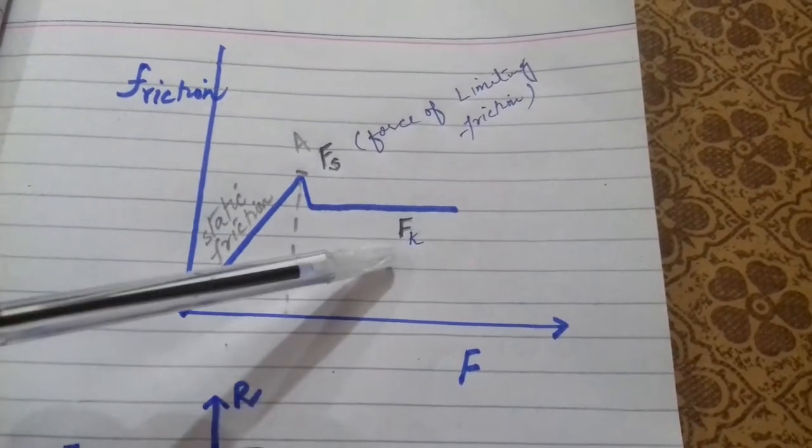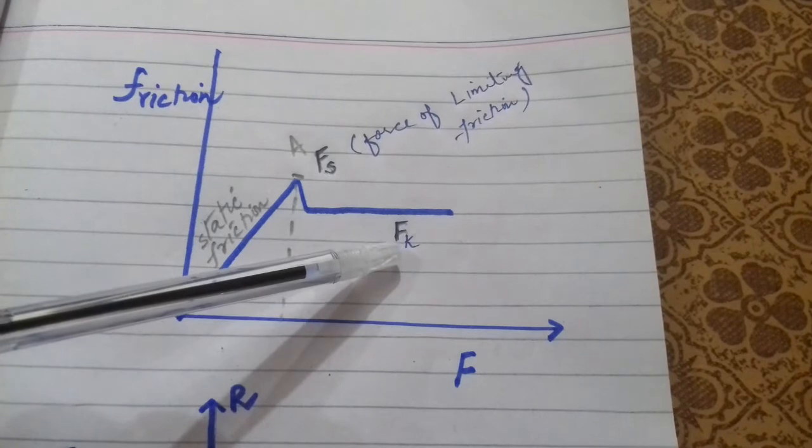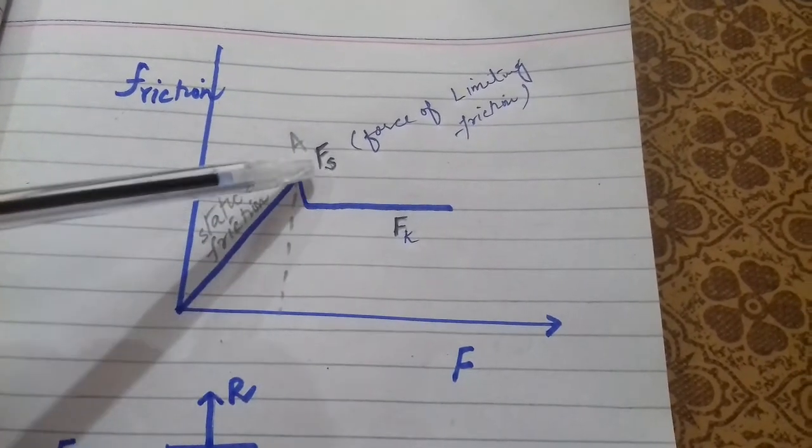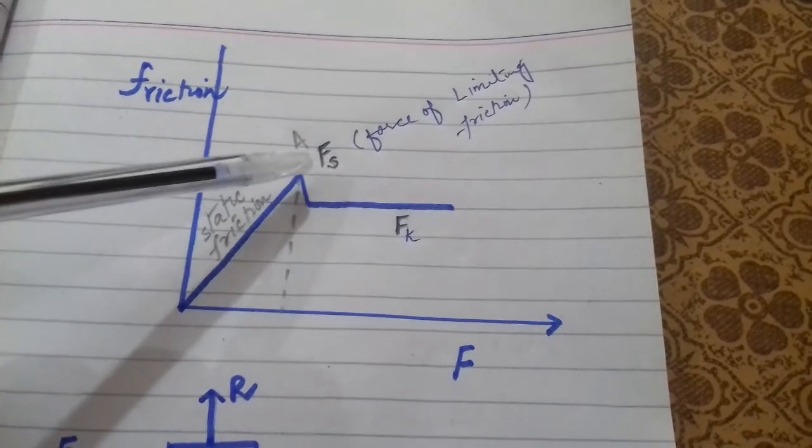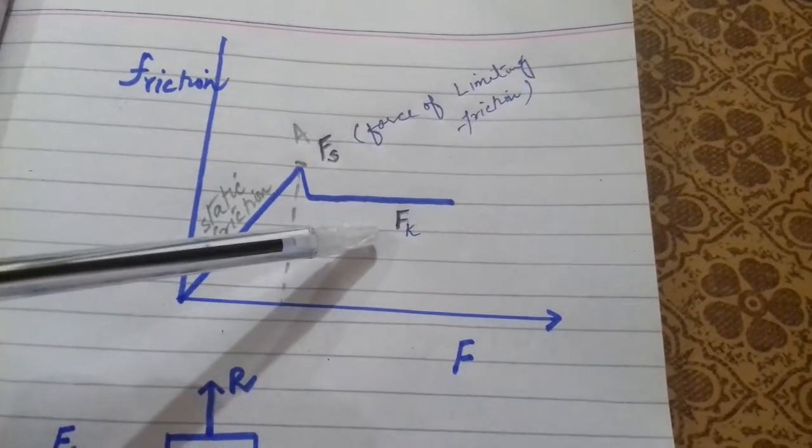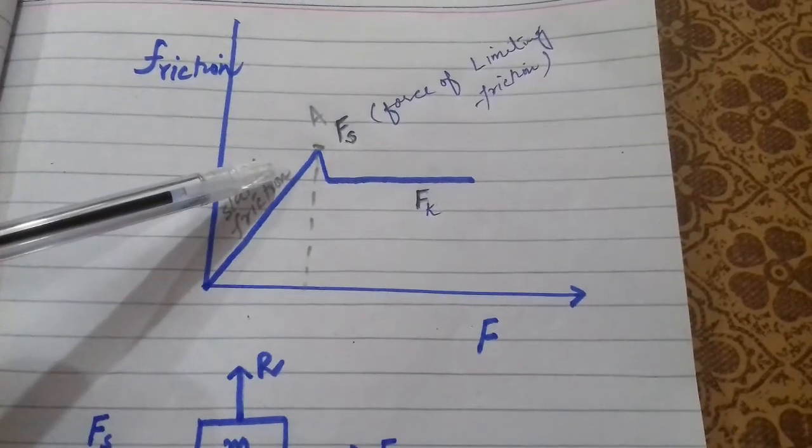This straight line represents kinetic friction. You can see that kinetic friction is comparatively less than static friction.